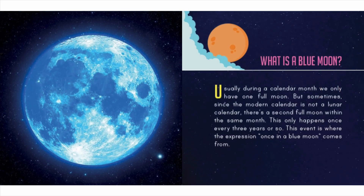What is a blue moon? Usually during a calendar month we only have one full moon, but sometimes — since the modern calendar is not a lunar calendar — there's a second full moon within the same month. This only happens once every three years or so, and this event is where the expression "once in a blue moon" comes from.